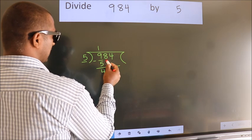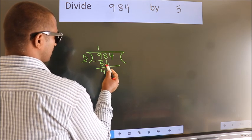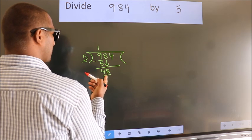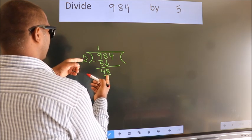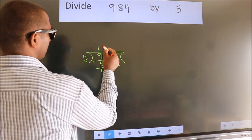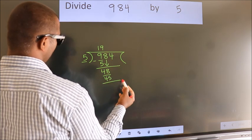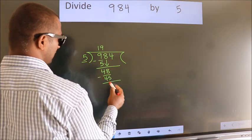After this, bring down the beside number. So, 8 down. So, 48. A number close to 48 in the 5 table is 5 nines, 45. Now we subtract. We get 3.